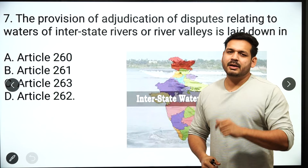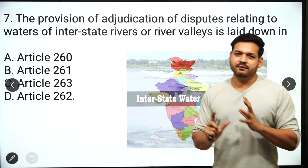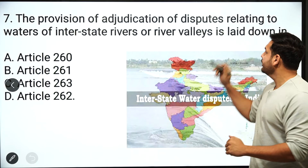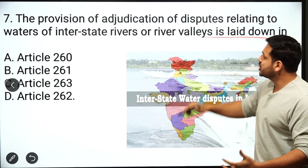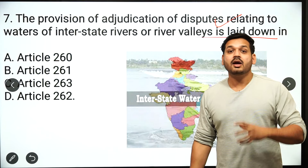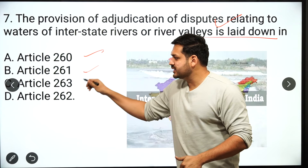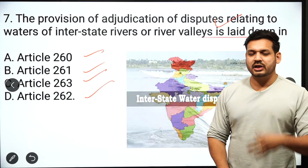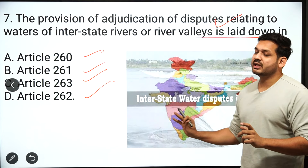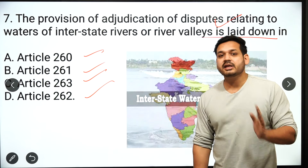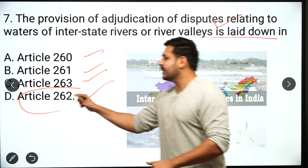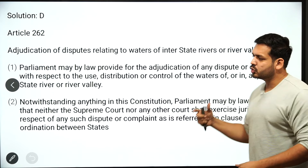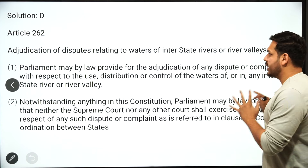The seventh question: I have asked about an article regarding the interstate river dispute. There is a provision that such a dispute can be adjudicated. Which article is it — 260, 261, 263, or 262? The correct answer is option D: Article 262 talks about the adjudication of interstate river water disputes. Article 262 has already been studied in the political lectures.